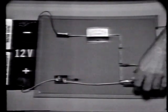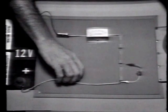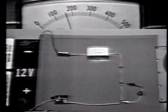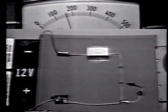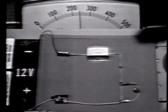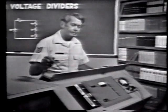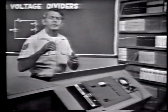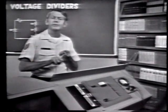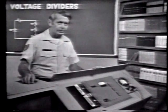Let me remove the ohmmeter and the load device and apply power. This is total current with the circuit unloaded. When I connect the load device, total current increases. The voltage in the divider changes due to a decrease in total resistance and a corresponding increase in total current.